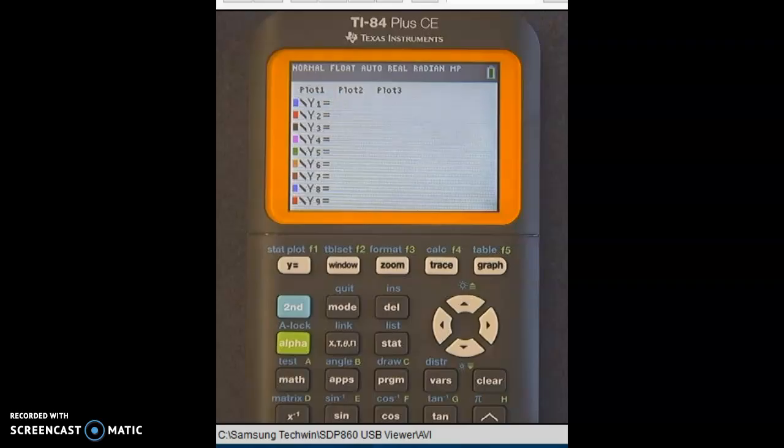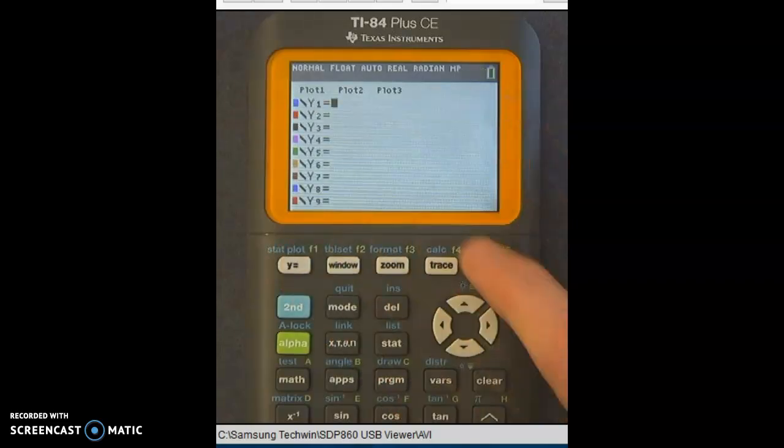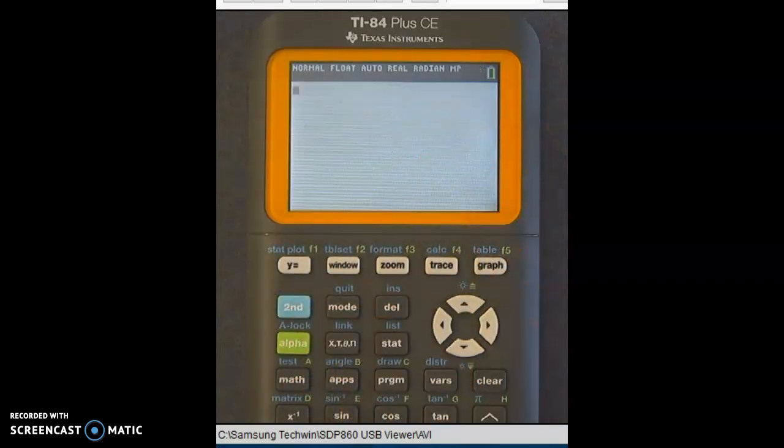And again, after you're done using the table or the graph, you can hit Y equals and graph. But if you want to go back to the main screen, you just hit second, quit.